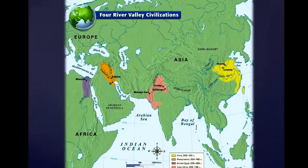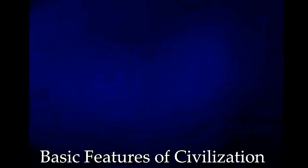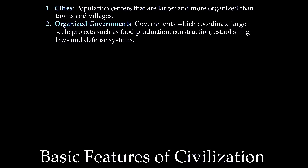The final thing we'll look at are what really defines a civilization. Let's look deeper into those basic features. The first is cities — population centers bigger than small villages and towns, think thousands of people, yet still more organized. The second is organized governments, which are an important feature because of their ability to organize projects related to food production, construction, establishing laws, and even defense systems.